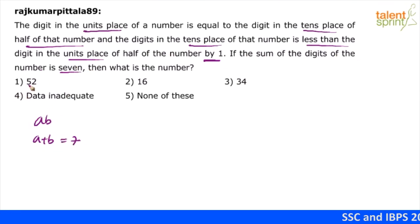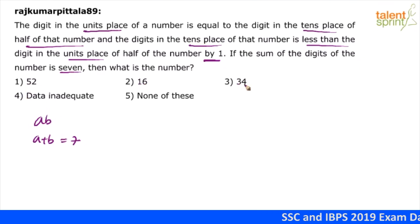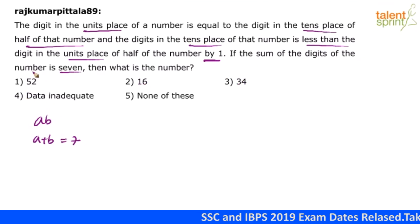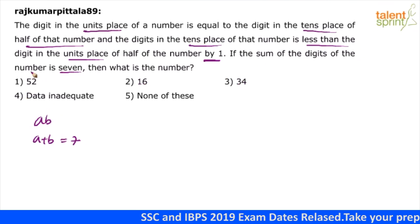5 plus 2 is 7. 1 plus 6 is 7. 3 plus 4 is 7. All three options satisfy this condition, so this would not really help us. We will have to go for the first and second conditions.